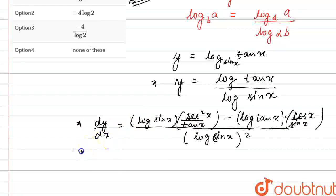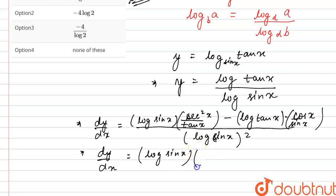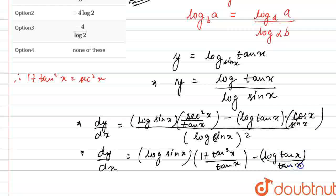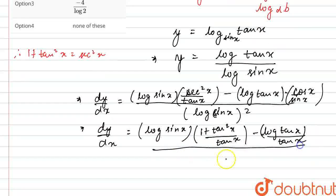I can write dy/dx as log of sine x times, and since 1 plus tan²x equals sec²x, I write secant squared x as 1 plus tan²x divided by 10x, minus log of 10x divided by 10x, all divided by log of sine x whole squared.